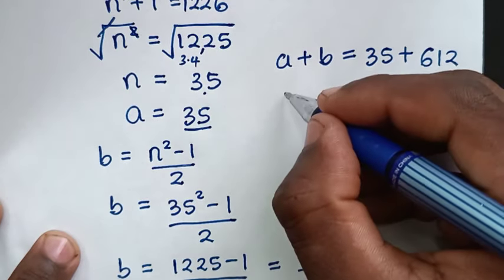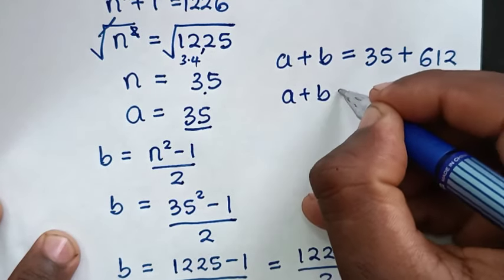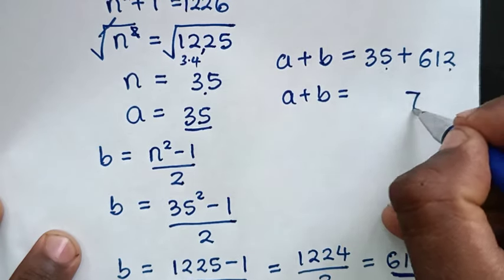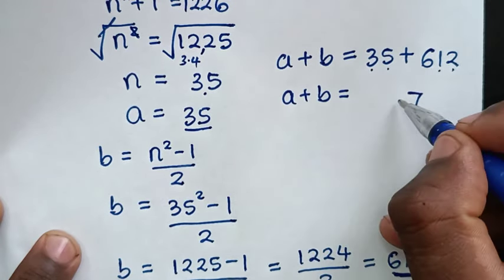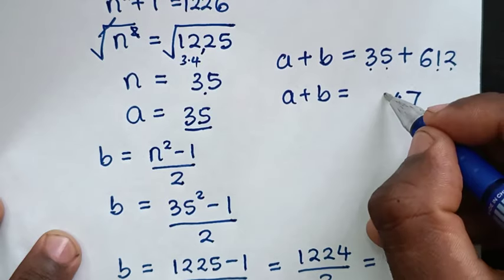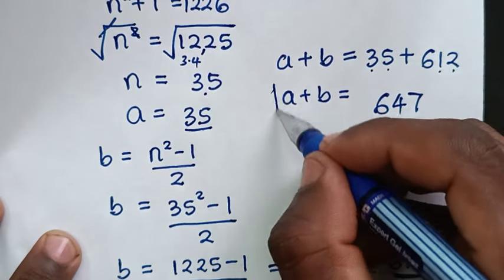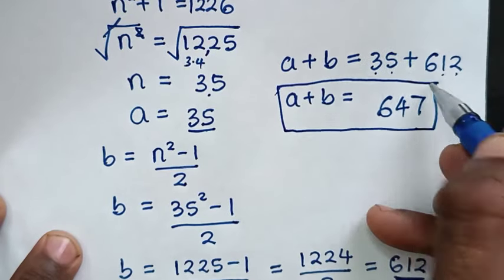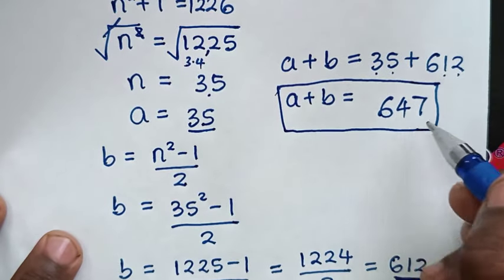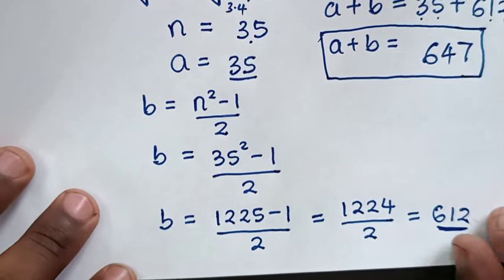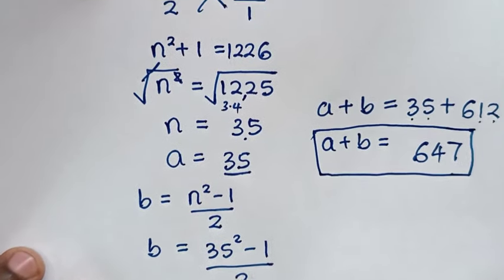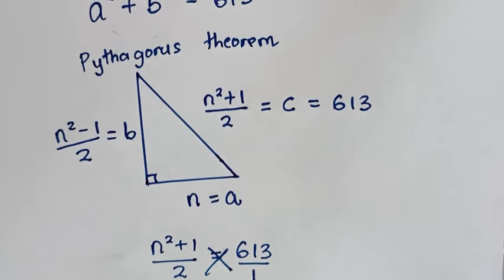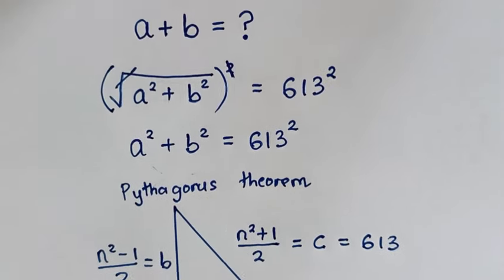Now we find a plus b. a is 35 and b is 612, so a plus b equals 35 plus 612, which is 647. That is the answer to this problem. Thank you. Don't forget to subscribe to my channel, and see you in the next video. Bye bye.